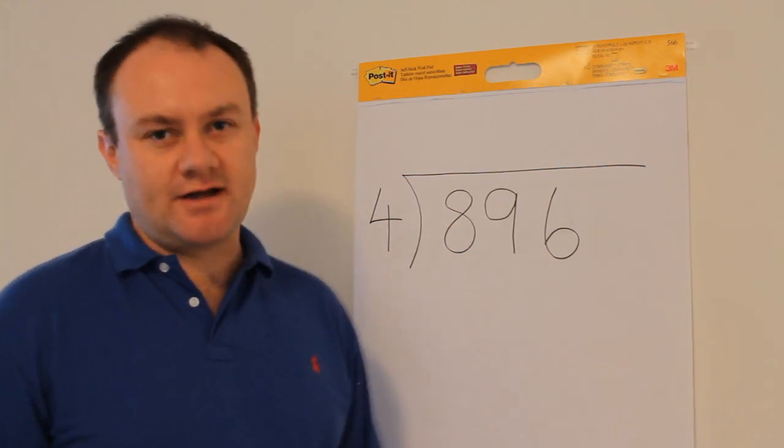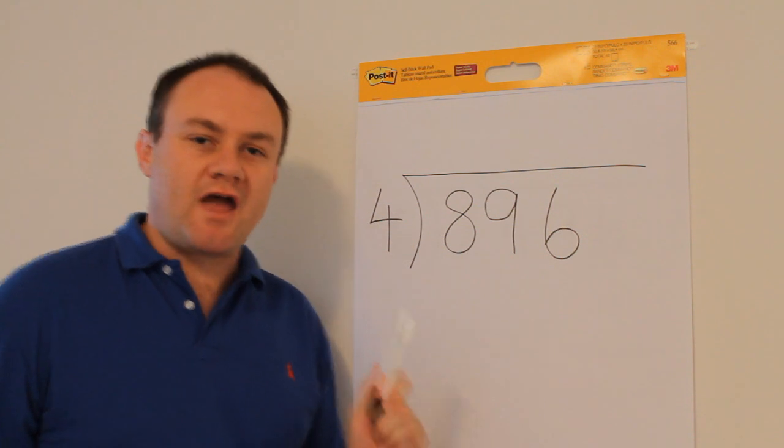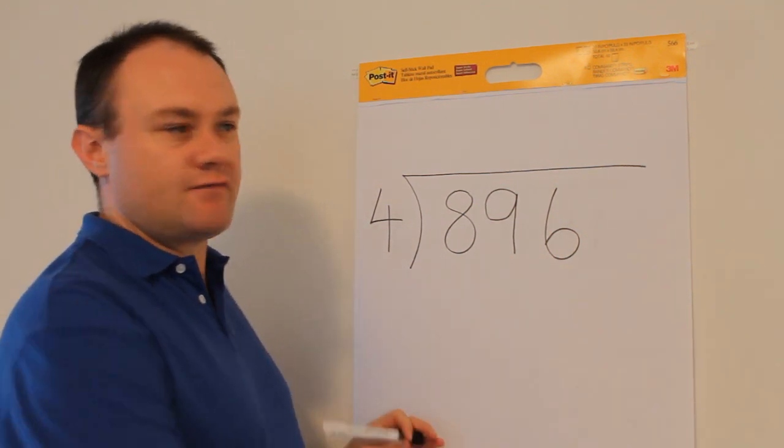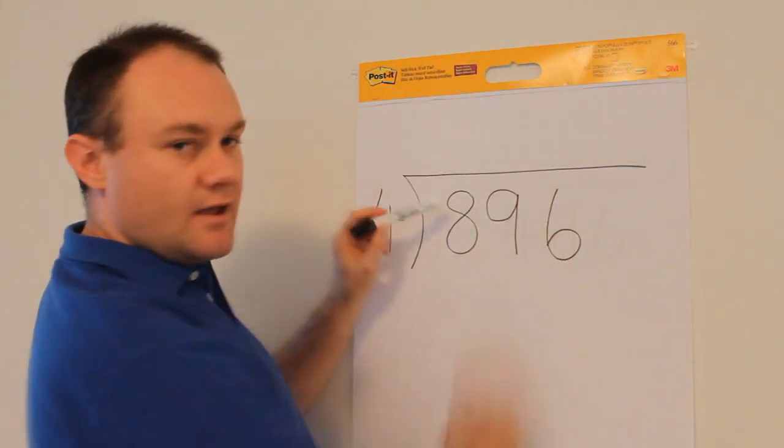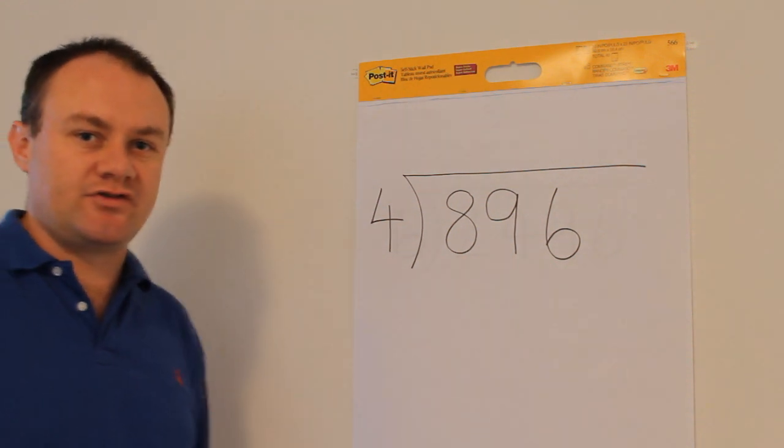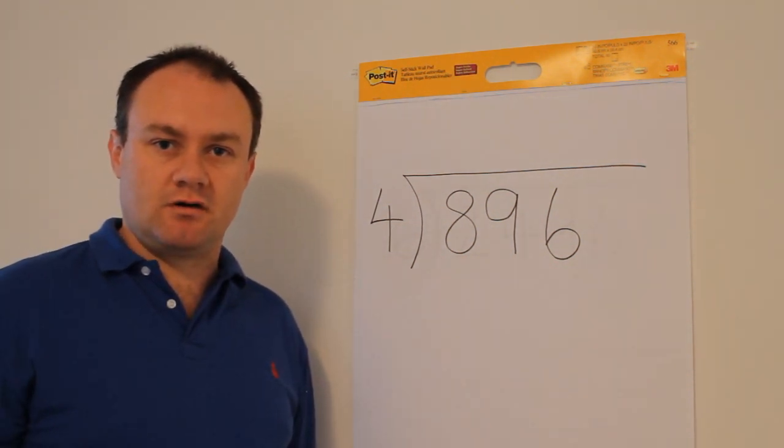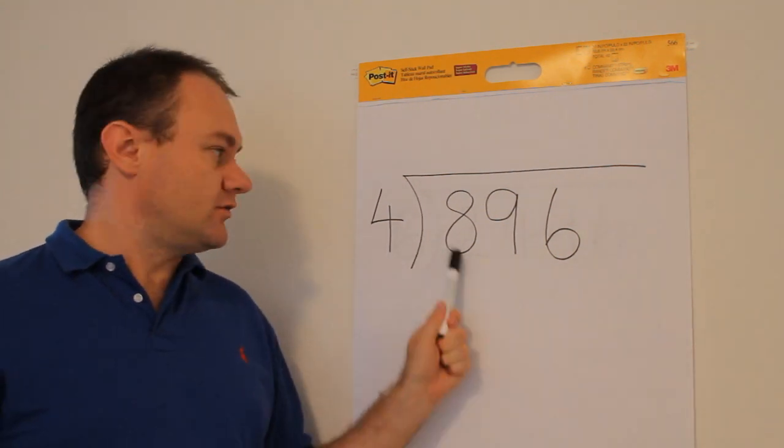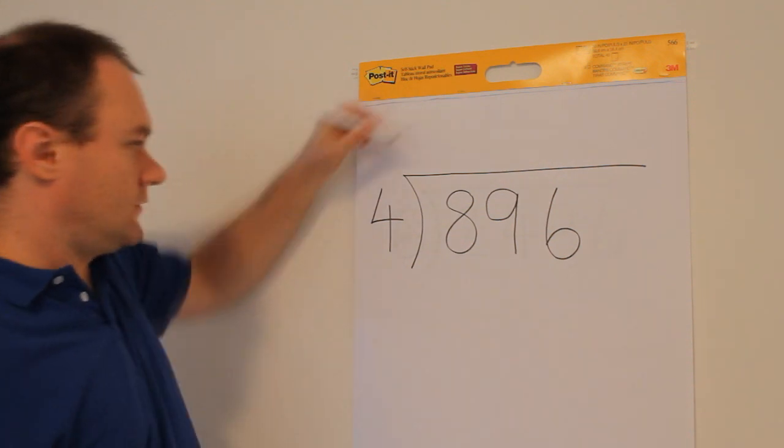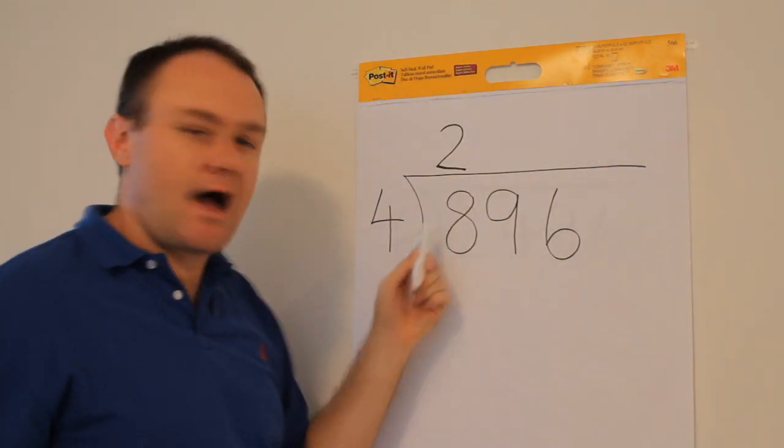What is 896 divided by four? Well, what you do with every division question no matter how hard is you always start by mentally covering up everything except for this digit on the left here. To begin with, that's the only one that you're interested in. So it then simply becomes a question of how many times does four go into eight? And the answer is of course two and I write the two above the eight.